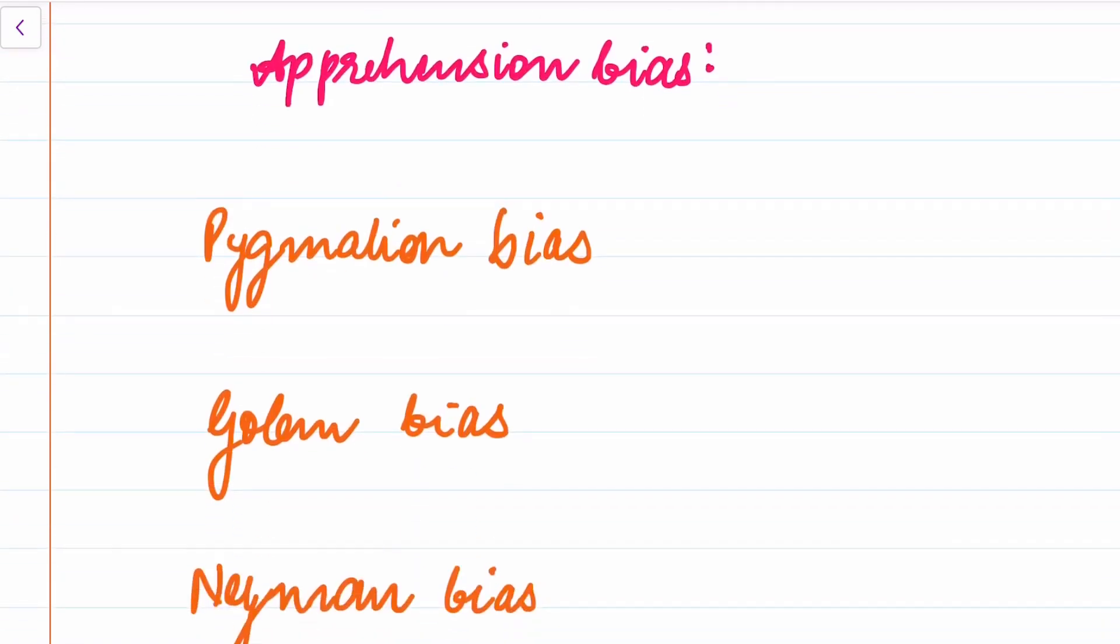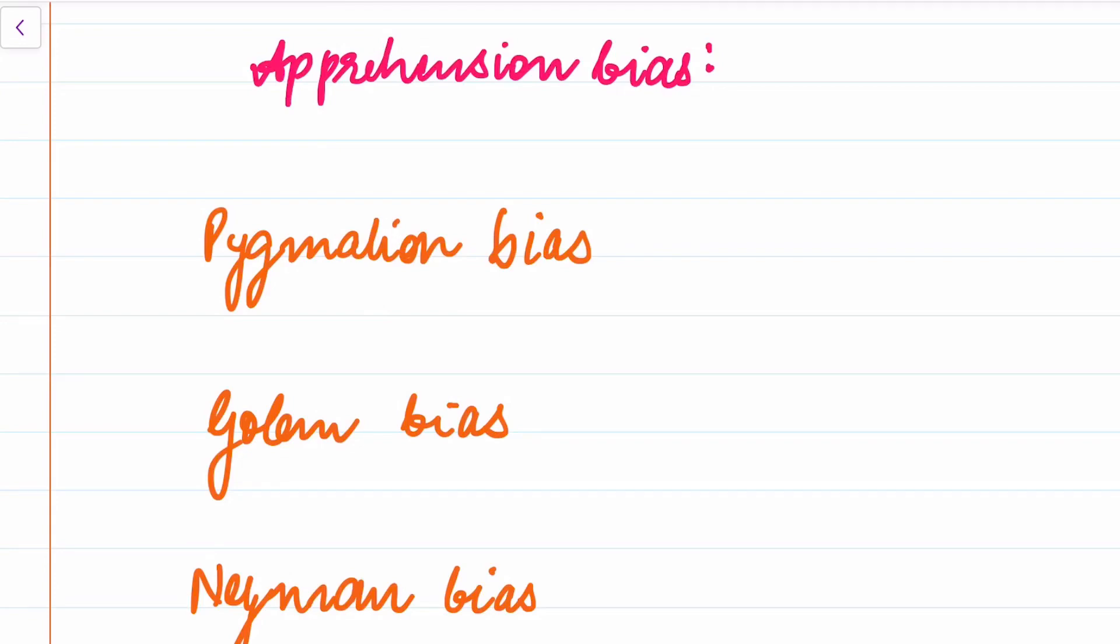What is Pygmalion bias? Pygmalion bias is that increase in motivation by Sumeet Sethi sir increases your rank. Increase in motivation by Sumeet Sethi sir increases your rank. That is Pygmalion bias. What is Golem bias? Decrease in motivation by teachers decreases your rank. Decrease in motivation by your friend demoralizes you.